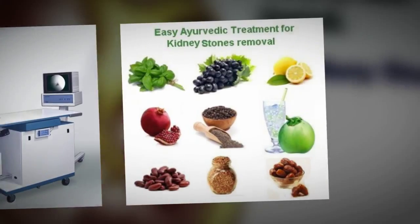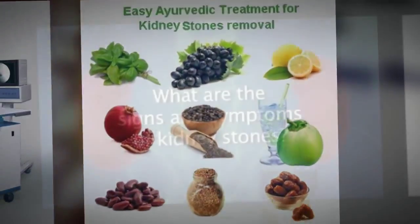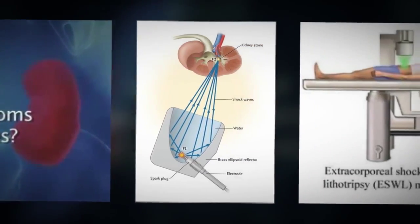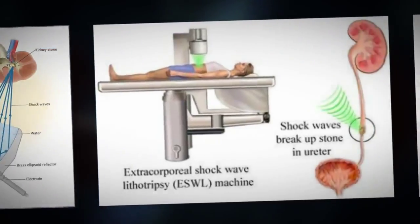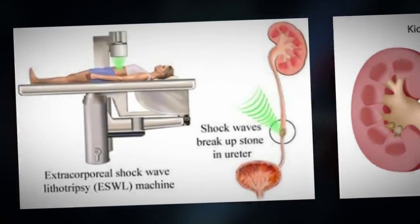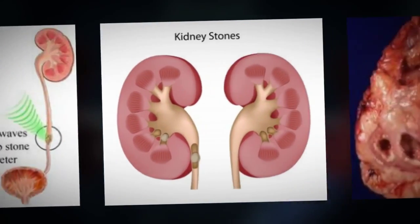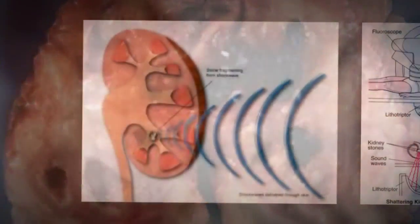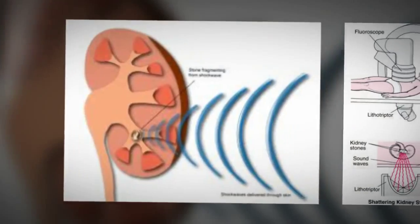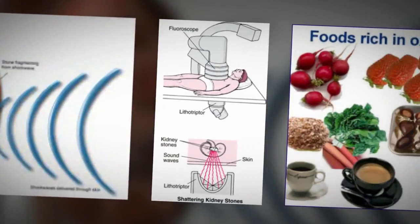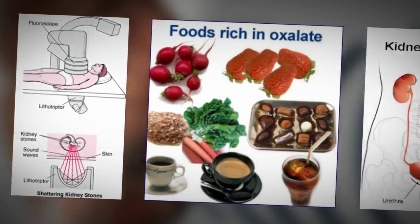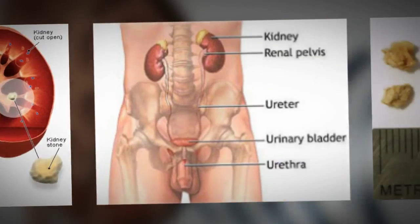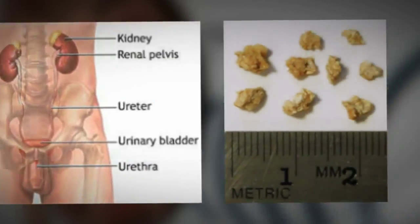Cystone causes disintegration of the calculi and crystals by acting on the mucin which binds the particles together. Any person who has developed a kidney stone in the past is likely to develop more in the future. Cystone effectively prevents the formation of stones in future too.